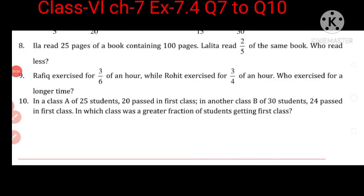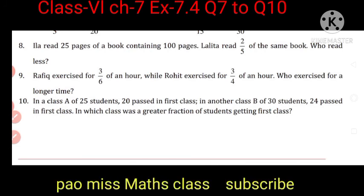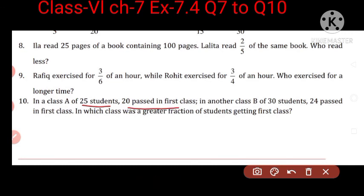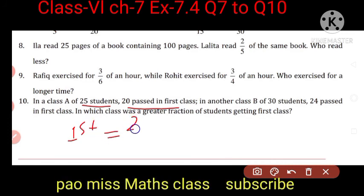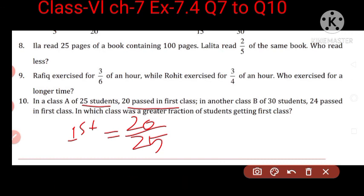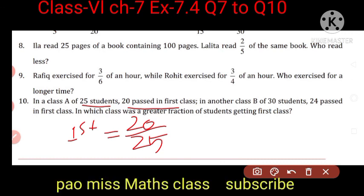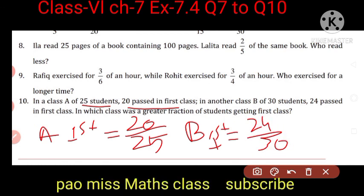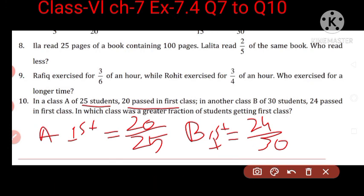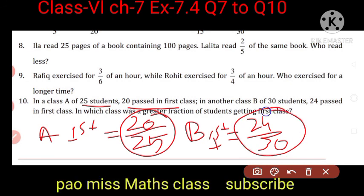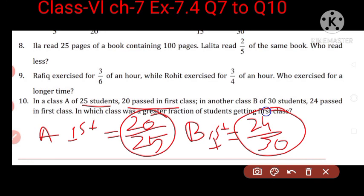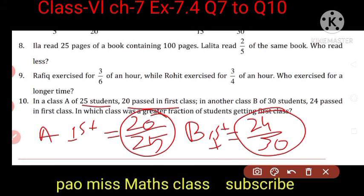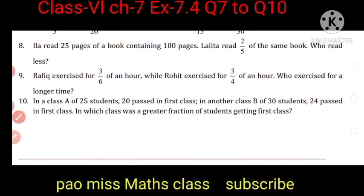Question 10: In Class A there are 25 students and 20 passed in first class, so the fraction is 20 upon 25. In Class B there are 30 students and 24 passed in first class, so the fraction is 24 upon 30. We need to find which class has the greater fraction of students getting first class. They are unlike terms, so we compare by making denominators equal.